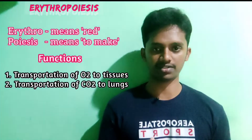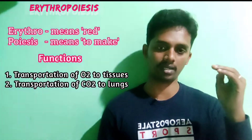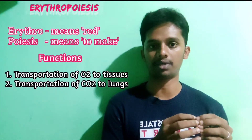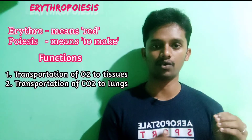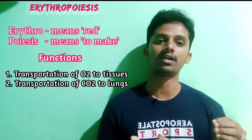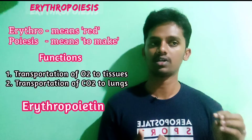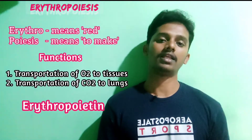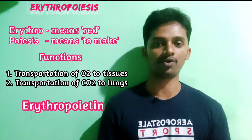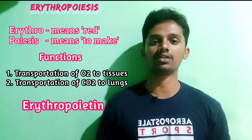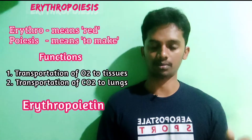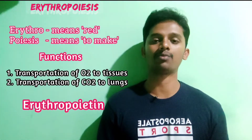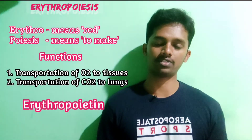As you can see, when there is oxygen depletion in our body — that is, less oxygen — the kidney cells detect low oxygen levels and release a substance called erythropoietin. Erythropoietin is a hormone required for stimulation of erythropoiesis. When oxygen levels are low, the kidney cells secrete this hormone to stimulate erythropoiesis.